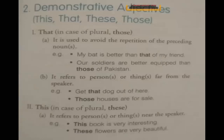Demonstrative adjectives: this, that, these, those. These adjectives are called determiners when they are used before a noun. Remember, students: this, that, these, those are working as determiners when they are placed before a noun. We just need to justify how each one is working.